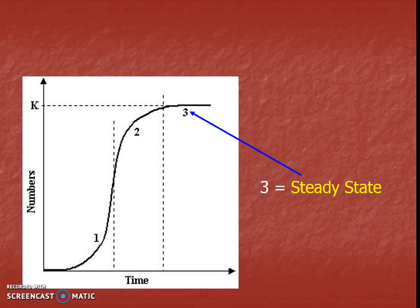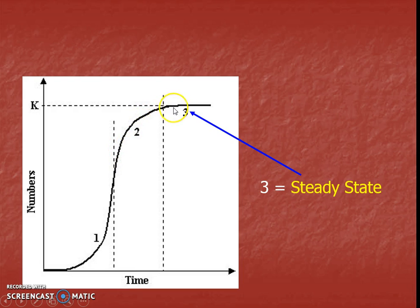Eventually I hit this steady state or plateau where the population levels out. We've been practicing talking about graphs and trends — increasing, increasing, a faster rate of increasing for exponential — and now slowing the increase until it levels out to be constant. We're talking about this almost level or constant state, which is why we call it steady.